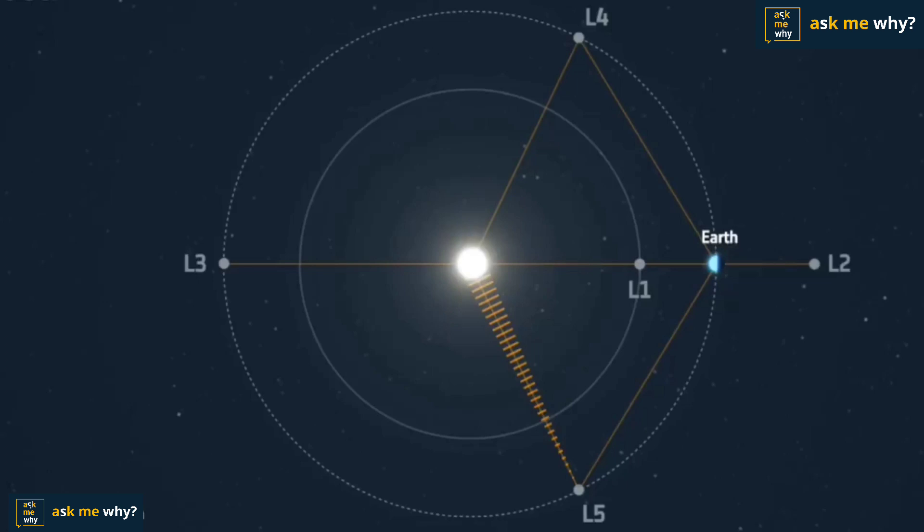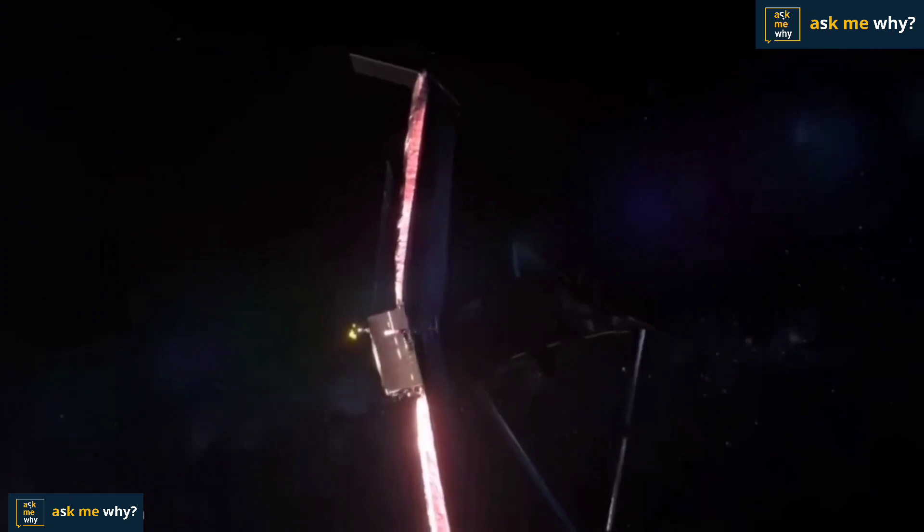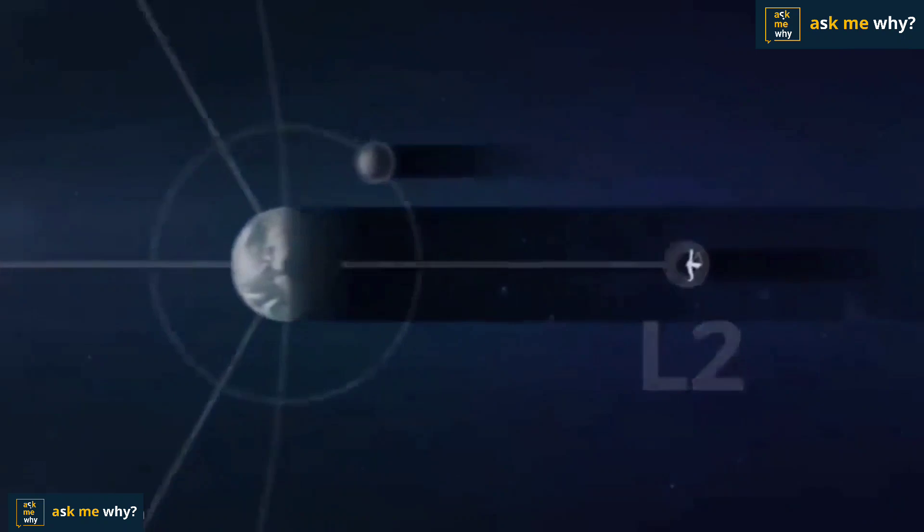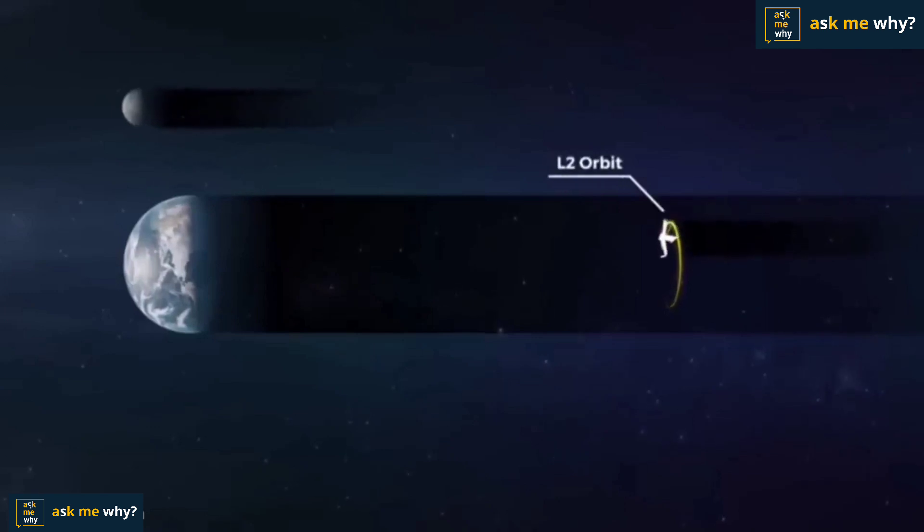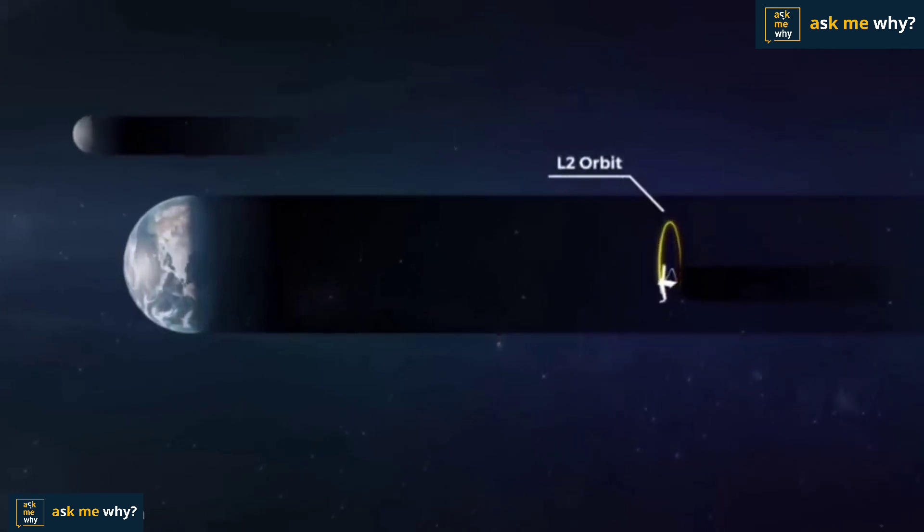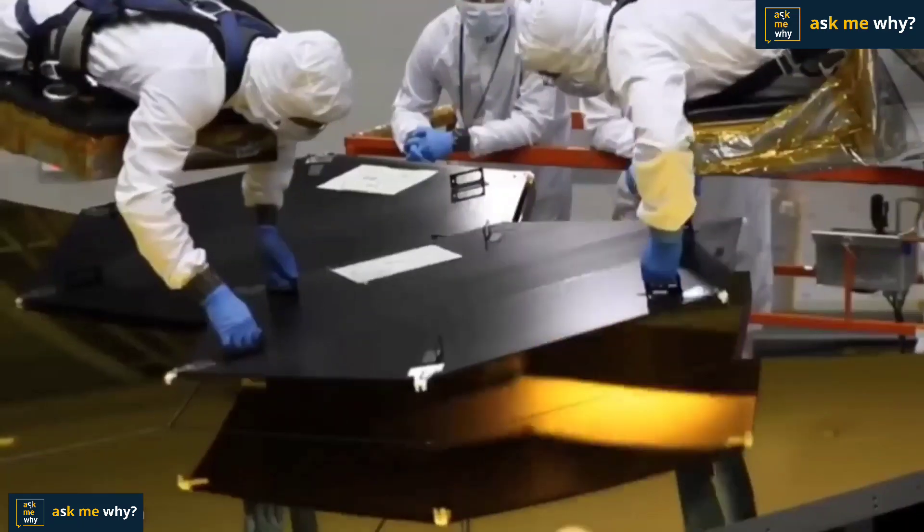There are 5 such Lagrange points between sun and earth. The reason for choosing L2 point is, if light from the sun hits this James Webb telescope directly, it will not work effectively. So James Webb should have no light. The L2 point is located in areas where the sun does not shine like it does on earth. That is why James Webb is placed here.